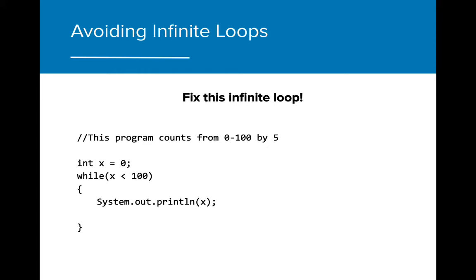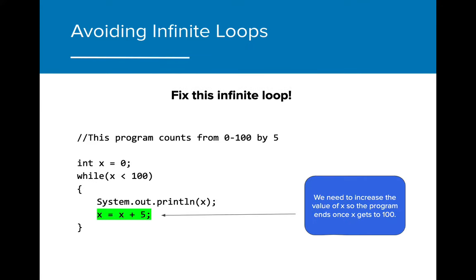Let's get some practice writing while loops. In this problem, figure out what code you need to add in order to get this while loop to stop running forever. For this problem, we need to add a statement that increases the value of x. Without this, the value of x remains zero and the program will run forever. This ensures that x will increase in value on each iteration through the loop.